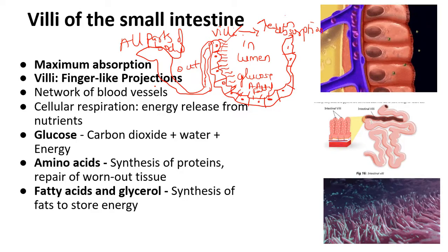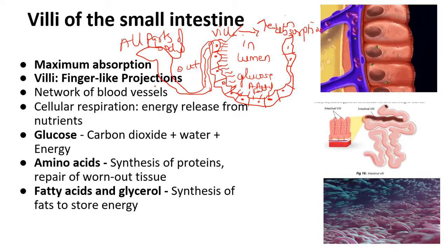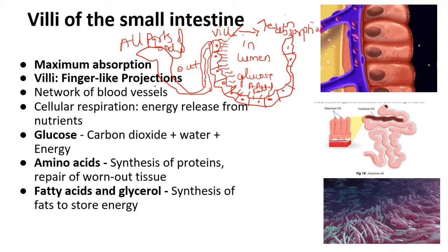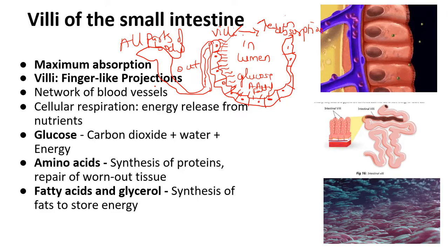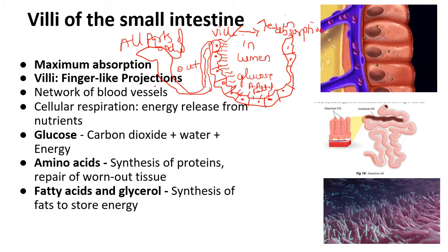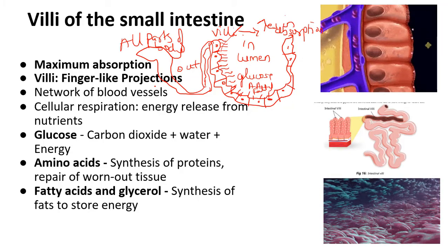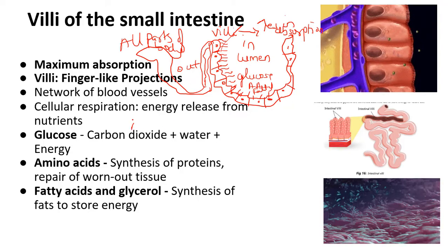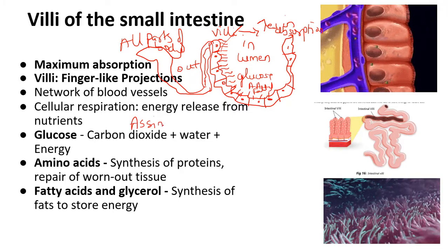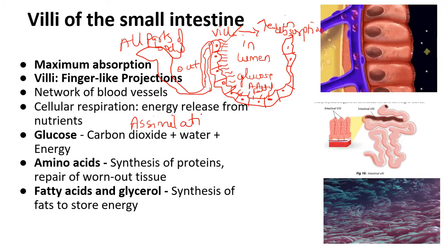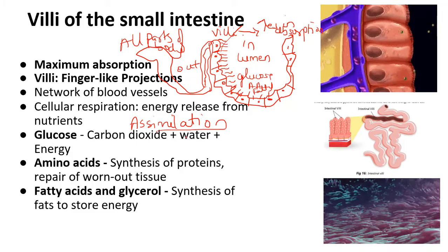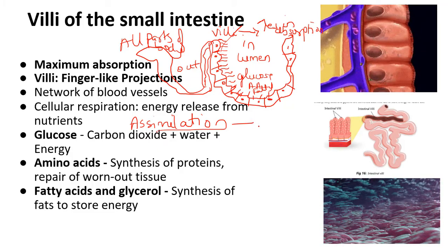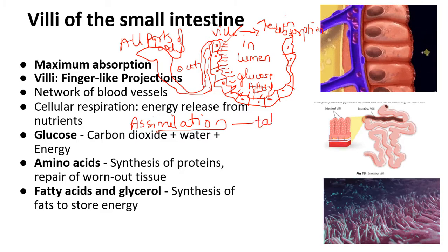Once the blood gives the substances to the cells, the cells use them, and this usage of simple compounds is called assimilation. Assimilation takes place inside each and every cell of our body, where the simple substances are used to carry out various life activities.